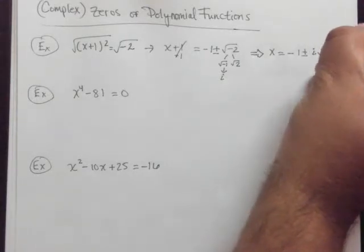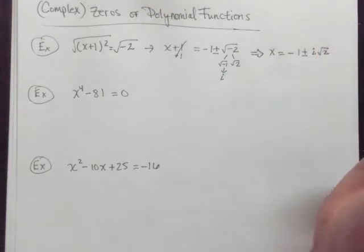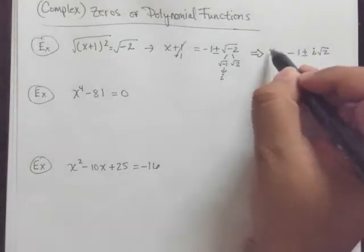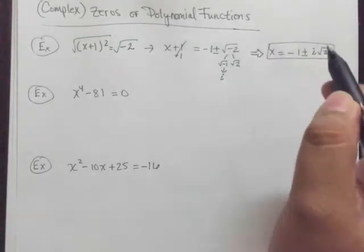and then square root of 2, because the square root of 2 is irrational. You can't take the square root of it. So this right here is what that square root would look like. Okay, so that's the first answer for this first problem.